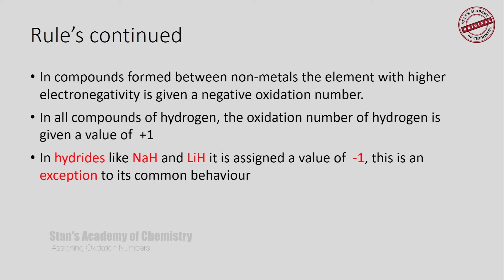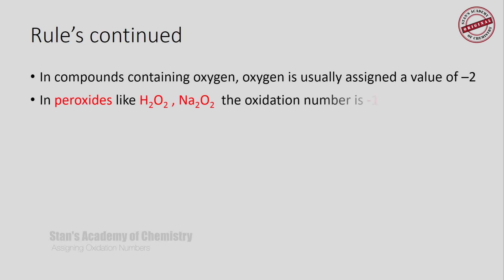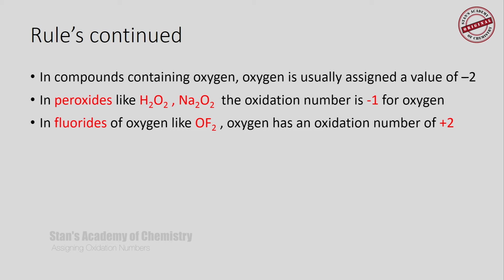Always look out for exceptions before determining the oxidation number of the unknown element in a compound. In compounds containing oxygen, oxygen is usually assigned an oxidation number of -2. In peroxides, like hydrogen peroxide and sodium peroxide, the oxidation number is -1 — again an exception. In fluorides of oxygen, fluorine is more electronegative than oxygen, so fluorine has a negative oxidation number and oxygen has a positive oxidation number. For example, in oxygen difluoride (OF₂), the oxidation number of oxygen is +2. In O₂F₂, each fluorine has -1 and oxygen has +1.